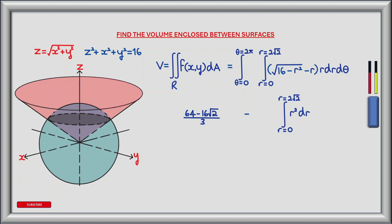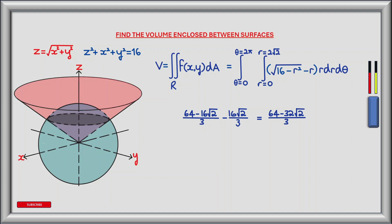For the second integral we integrate minus r squared dr between r equals 0 and r equals 2 root 2. Using the power rule gives minus r cubed divided by 3, evaluated between 0 and 2 root 2, which gives minus 16 root 2 divided by 3. Combining both parts of the inner integral we have 64 minus 32 multiplied by the square root of 2, all divided by 3.